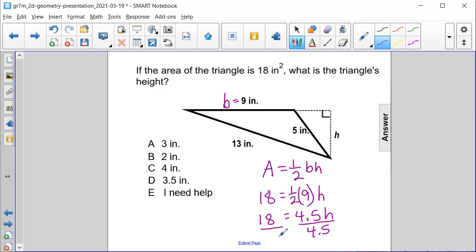When we divide by decimals, we actually have to convert them into whole numbers by multiplying both the top and bottom by 10. So then we get 180 over 45, and 45 goes into 180 four times. So 4 inches is going to be our height, or answer choice C.